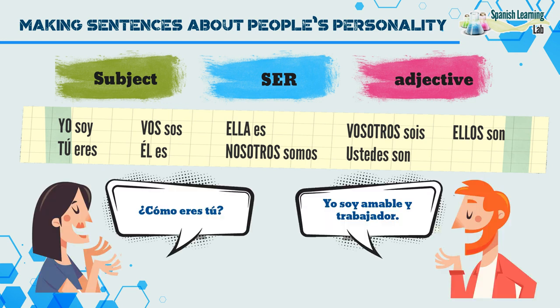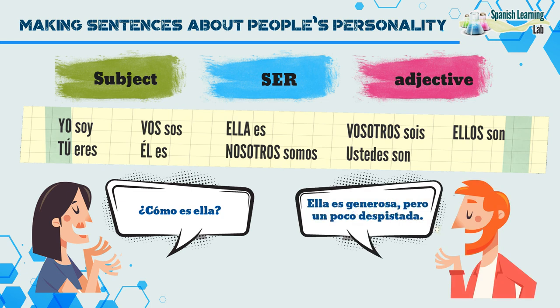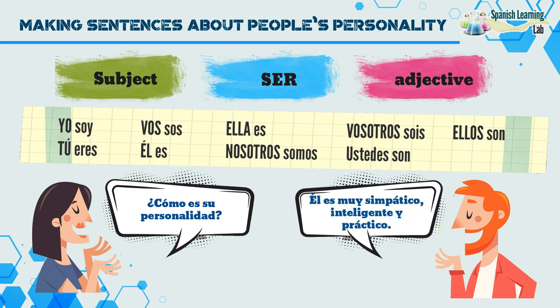¿Cómo eres tú? Yo soy amable y trabajador. ¿Cómo es ella? Ella es generosa pero un poco despistada. ¿Cómo es su personalidad? Él es muy simpático, inteligente y práctico.